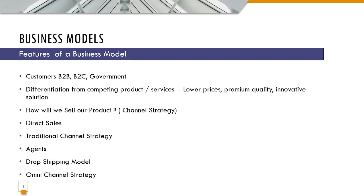Now we talk about features of a business model. The first question is: who is going to be our customer? The customer could be B2B, B2C, or the government. A B2B model is when one business sells to another business. A B2C model is where a business sells to a consumer. And then you have business-to-government, where the business sells to the government. The government is a major buyer from private businesses — it often contracts with defense and aerospace companies to purchase military hardware such as planes, missiles, tanks, and related equipment.